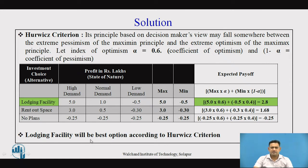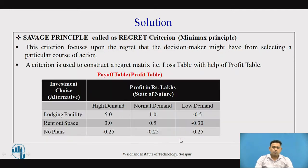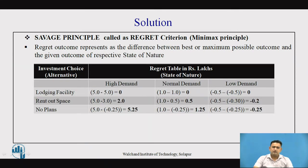So lodging facility is the best option according to the Hurwicz criteria. Now, one more criteria — the Savage principle — is also called the regret criteria or minimax principle. It is a principle in which the decision maker converts the profit table into a loss table, also called the regret table.